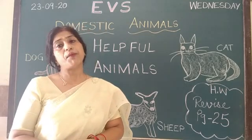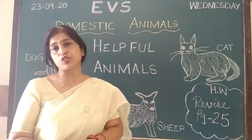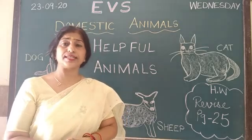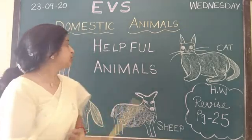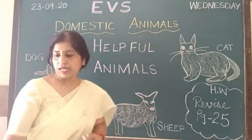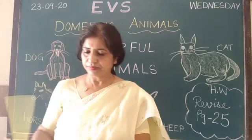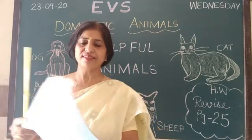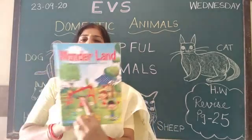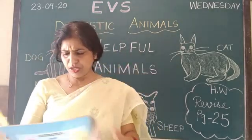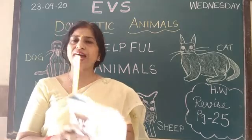Helpful animals are called domestic animals and they live in our fields and farms. कहाँ रहते हैं — यहाँ हमारे खेतों में और हमारे farmhouses में रहते हैं. So take out your book — Wonderland — and page number 25.